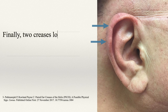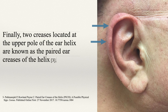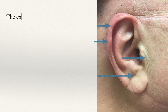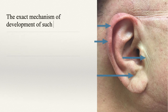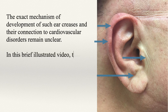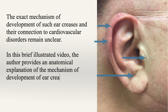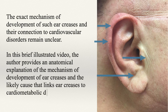Finally, two creases located at the upper pole of the ear helix are known as the paired ear creases of the helix. The exact mechanism of development of such ear creases and their connection to cardiovascular disorders remain unclear. In this brief illustrated video, the author provides an anatomical explanation of the mechanism of development of ear creases and the likely cause that links ear creases to cardiometabolic diseases.